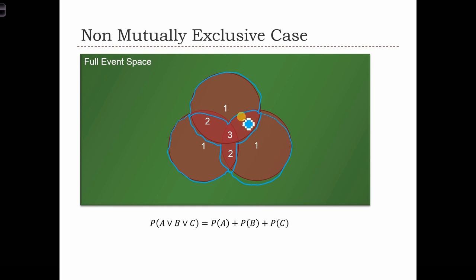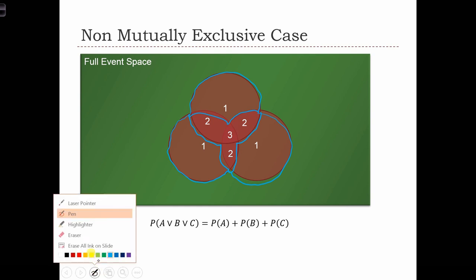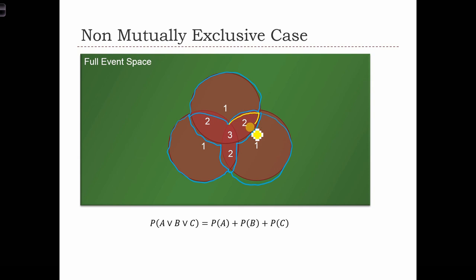The intersections, the bivariate intersections, or the two-way intersections, we would actually be adding up twice. So this area in here, we would be counting twice. This area over here, we would be counting twice. In this area over here, we would be counting twice.